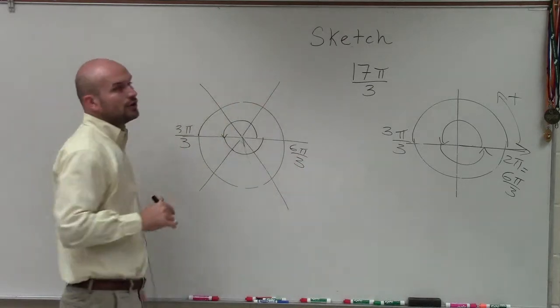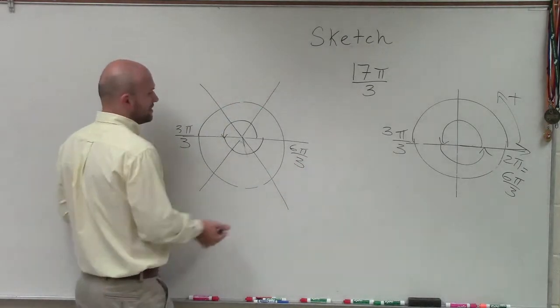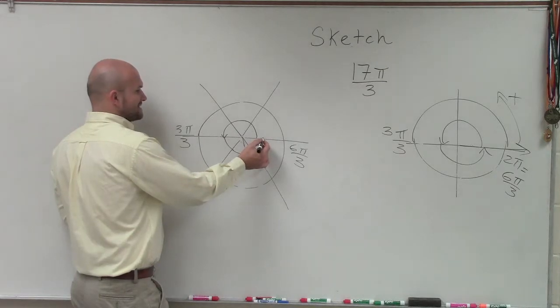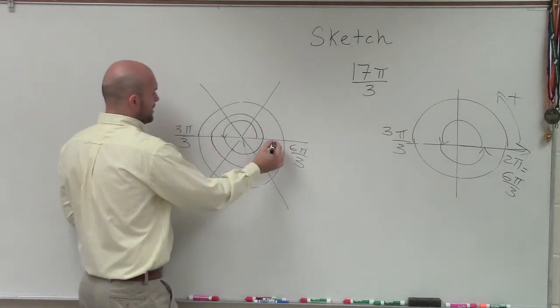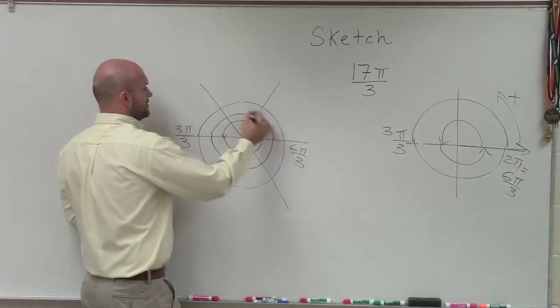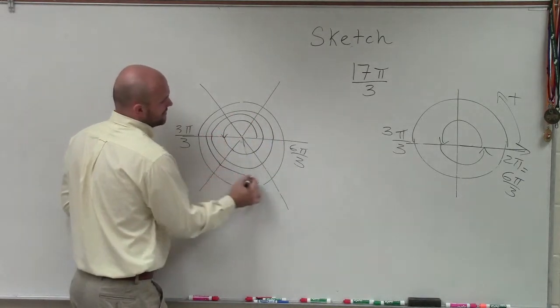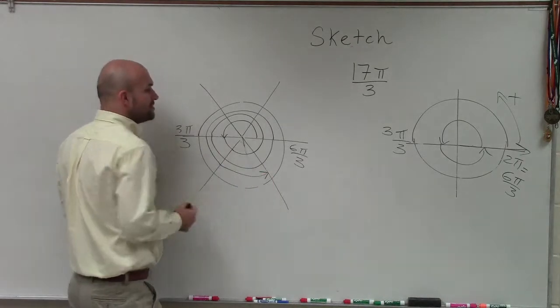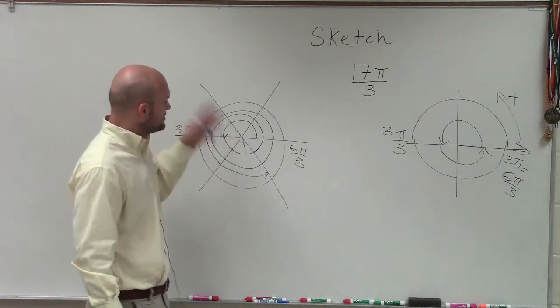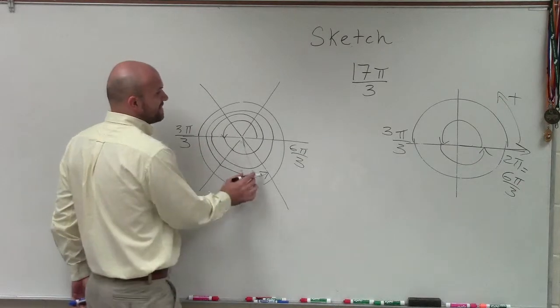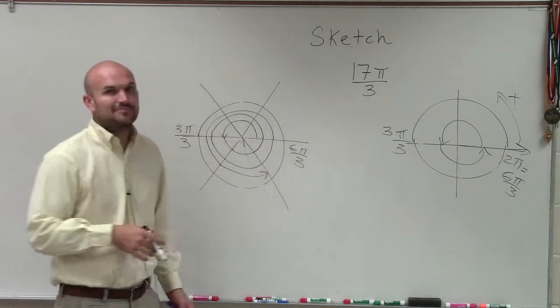And now I'm just going to continue going on to 17 pi over 3. Well, if I'm at 6 pi, I can kind of skip to, all right, there's 9 pi. There's 12 pi. Here's 15 pi. And then I have 16, 17 pi over 3. So this angle has a lot of extra revolutions that are going on. But as you keep on rotating around, rotating around, you can see that finally you get to the angle 17 pi over 3.